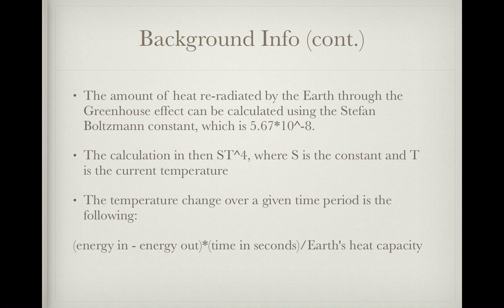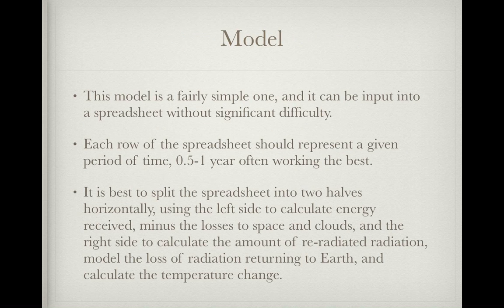Background info, continued. The amount of heat re-radiated by the Earth through the greenhouse effect can be calculated using the Stefan-Boltzmann constant, which is 5.67 times 10 to the negative 8. The calculation itself is S times T to the 4th, where S is the constant and T is the current temperature. The temperature change over a given time period is: energy in minus energy out, times time in seconds, over the Earth's heat capacity.